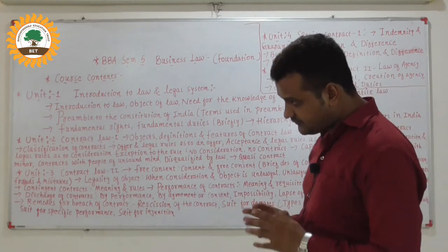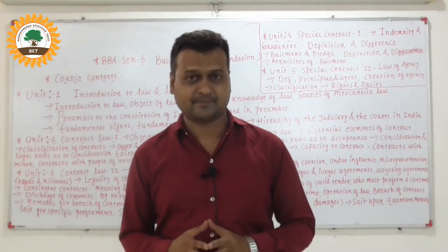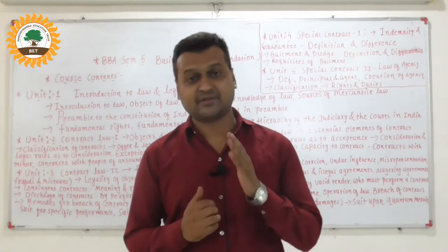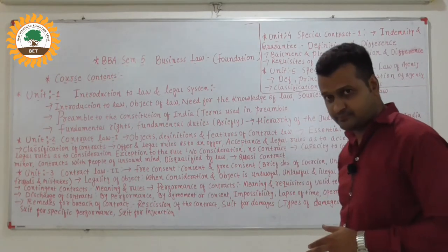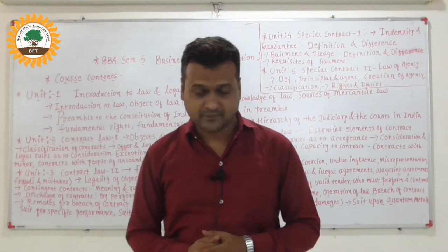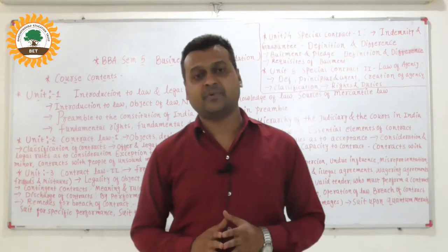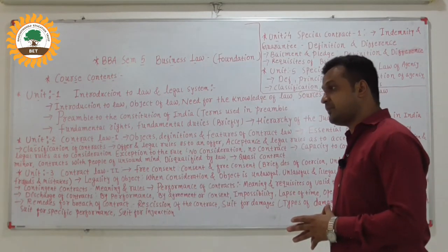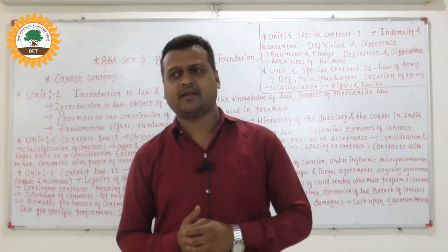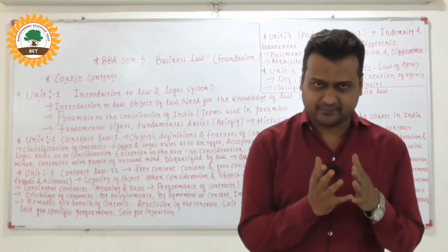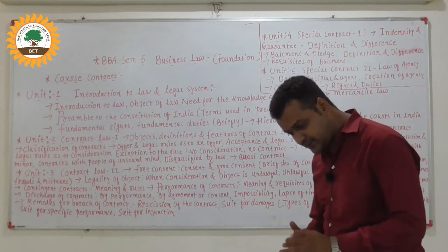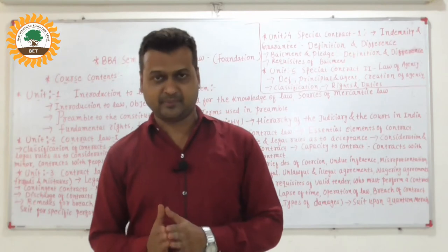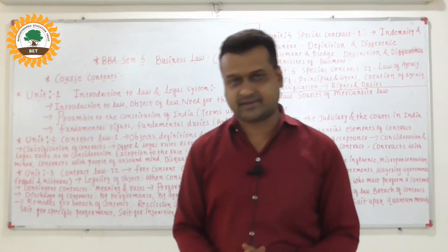Then capacity to contract — when you are making a contract with other parties, there are certain conditions you must fulfill to make a valid contract. For example, a contract with a minor: in the viewpoint of law, a contract with a minor is not possible, because a minor is not capable of making a contract. Also, contracts with people of unsound mind — unsound mind means a person who is lunatic, meaning not mentally balanced. And disqualification by law means you are not qualified to make such a contract.